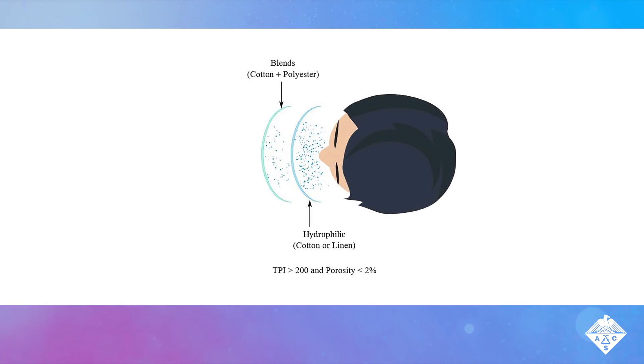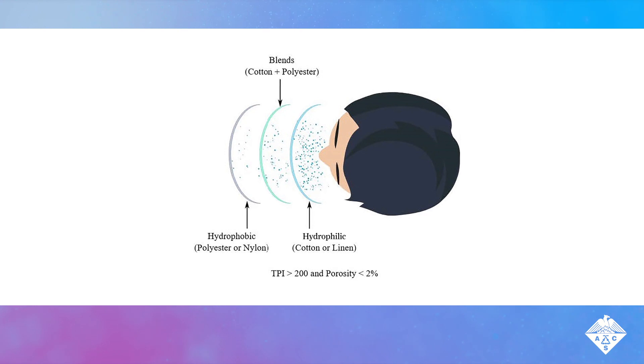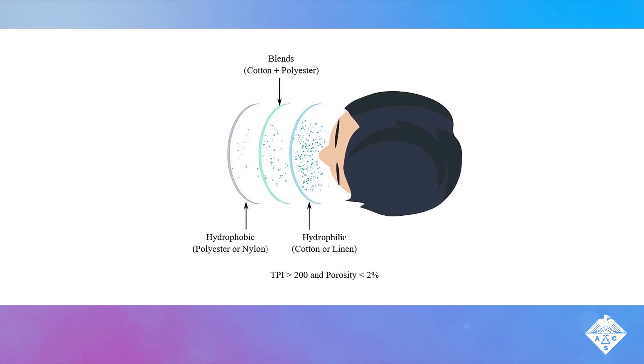The best masks for blocking droplets contained a hydrophilic, or water-attracting, inner layer of cotton or linen, an absorbent middle layer of a cotton-polyester blend, and a water-repelling, or hydrophobic, outer layer of polyester or nylon. Machine washing the masks didn't decrease their performance.